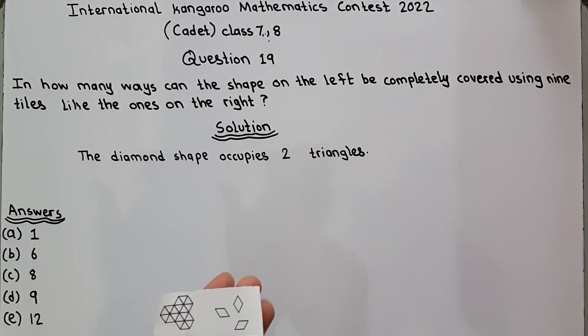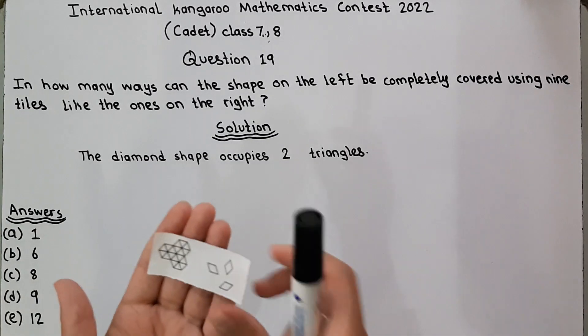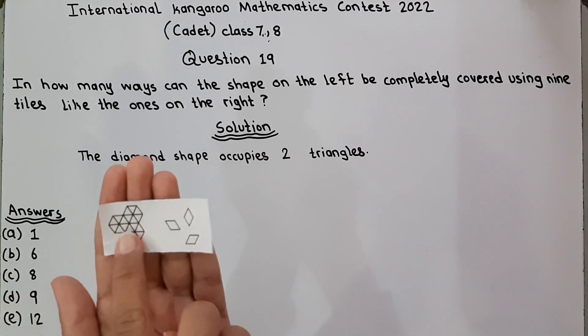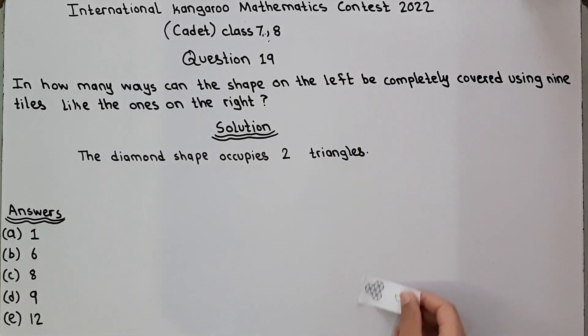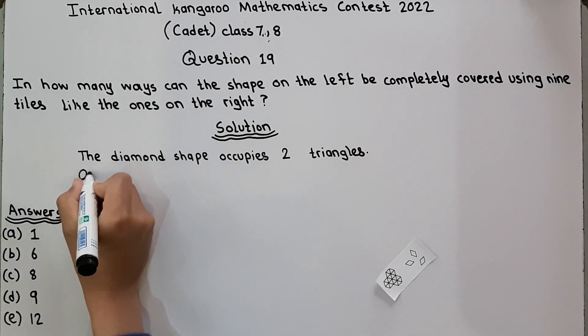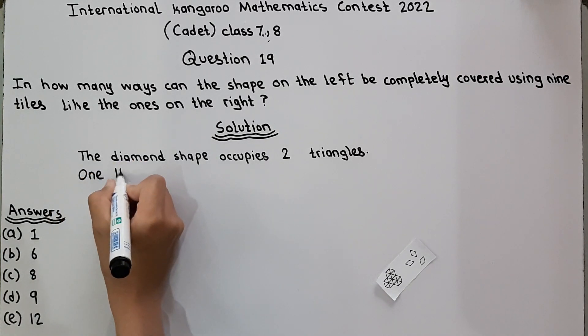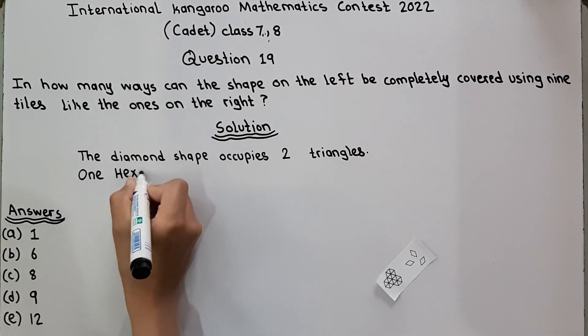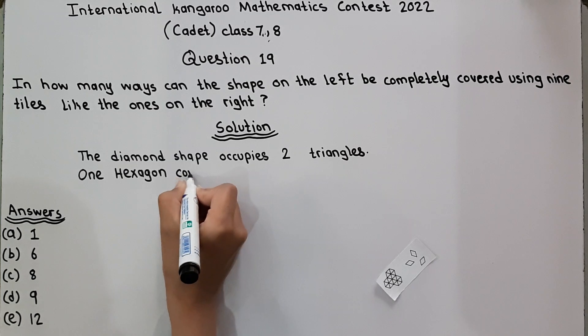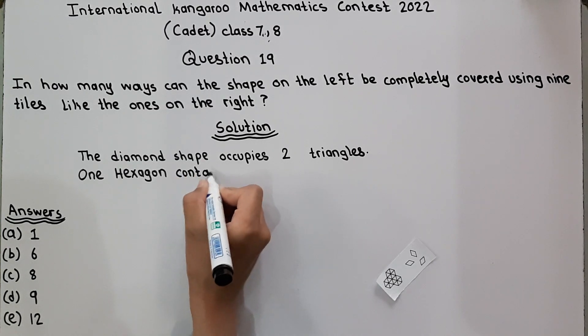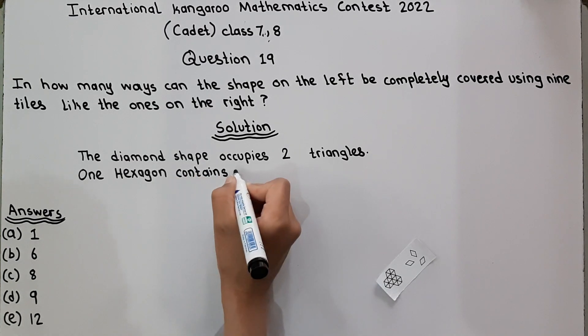So look, this one hexagon contains six triangles. One hexagon contains six triangles.